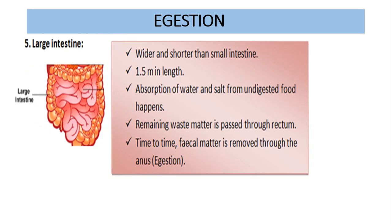The mnemonic continues: B for buccal cavity, O for esophagus, double S for stomach and intestine, L for large intestine, then rectum and anus. The large intestine is wider but shorter than the small intestine - 1.5 meters in length. It absorbs water and salt from undigested food. The remaining waste matter passes through the rectum, and the fecal matter is removed through the anus. This process is called egestion.